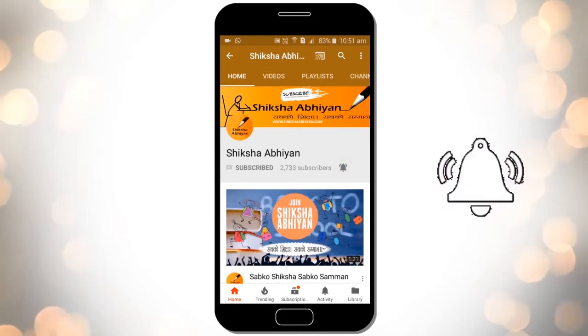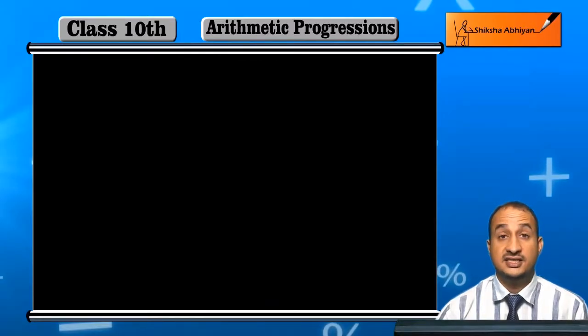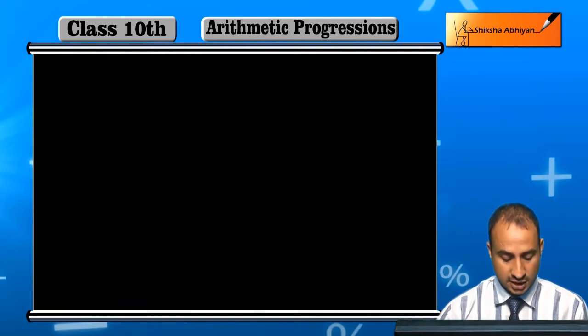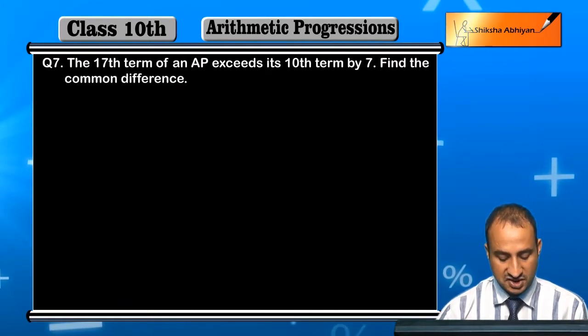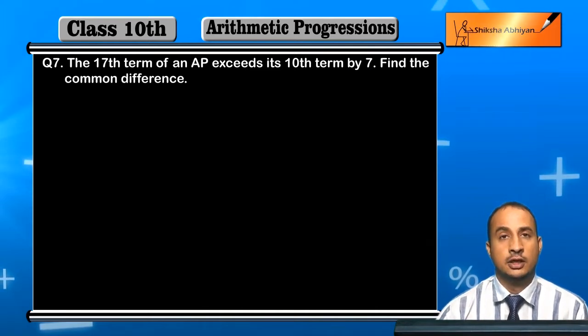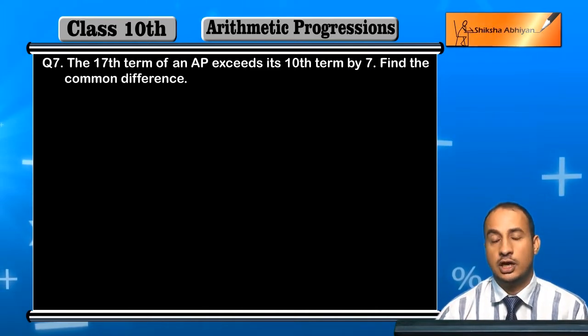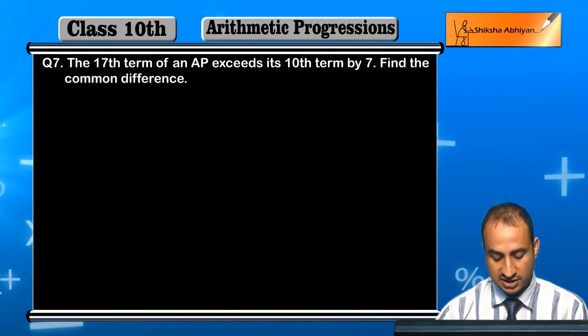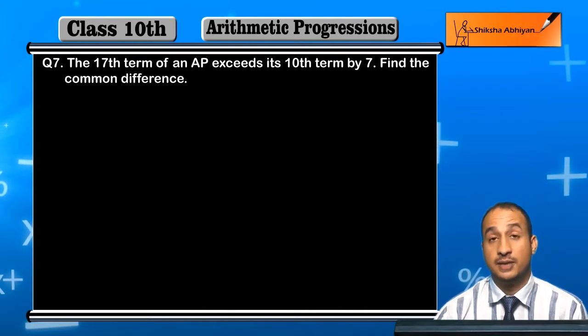Now students, see the seventh question of the exercise. The question is: the 17th term of an AP exceeds its 10th term by 7. The 17th term is more than the 10th term by 7. Find the common difference.